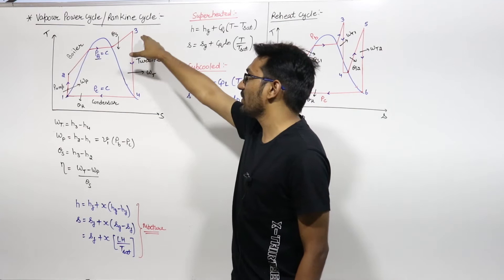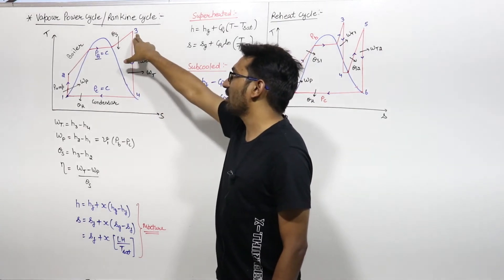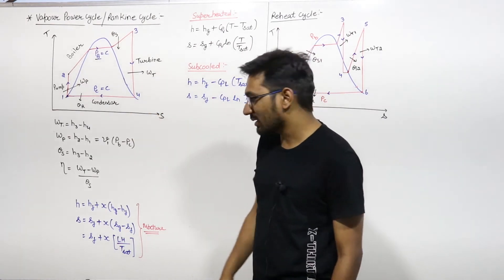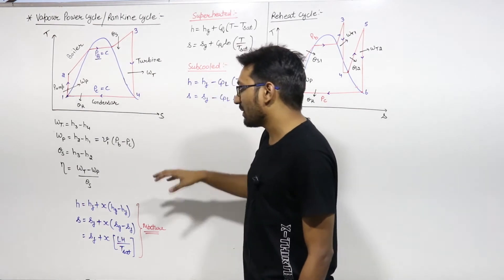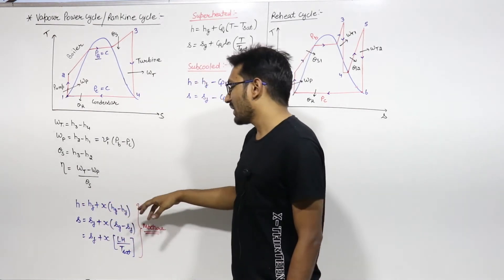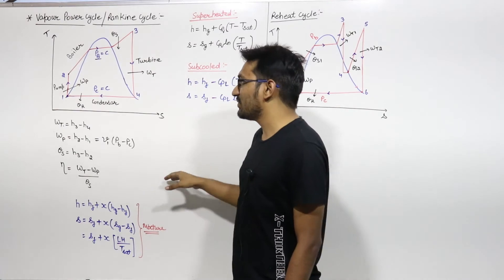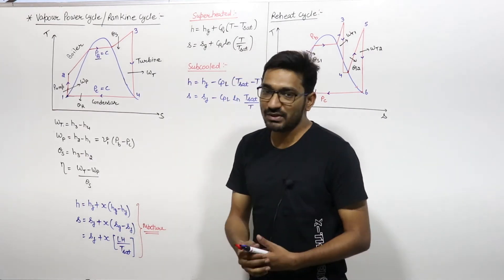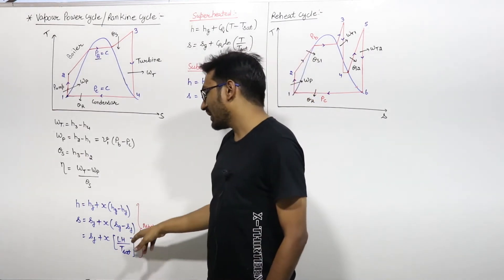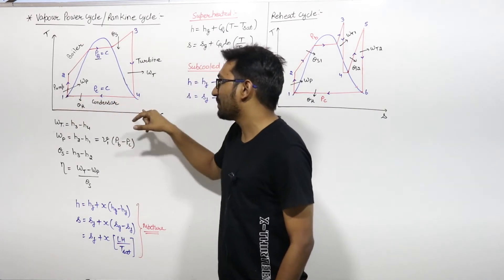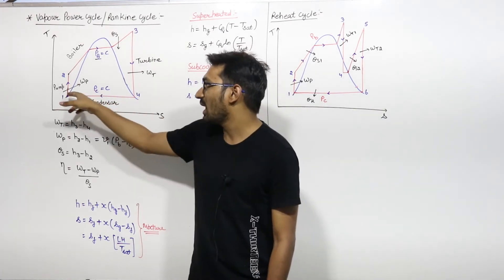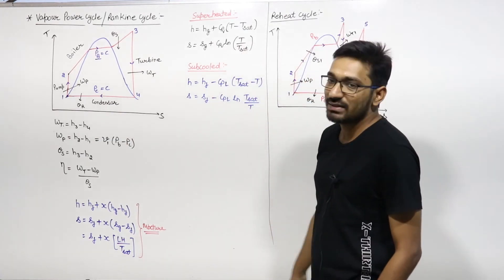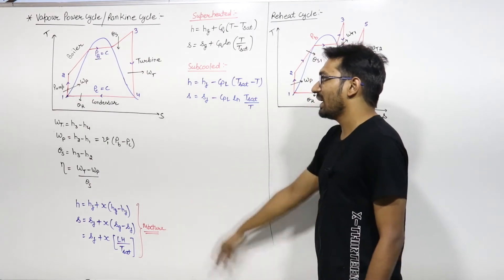To find the dryness fraction, note that this is an adiabatic reversible process — so it is an isentropic process. Therefore, entropy at point 3 equals entropy at point 4, and from that you can find the dryness fraction. Entropy at point 4 in the vapor mixture region equals SF plus X (dryness fraction) into (SG minus SF) at that temperature. Or if latent heat is given, entropy = SF plus X into latent heat divided by T-saturation.